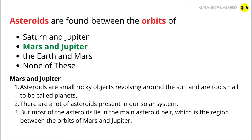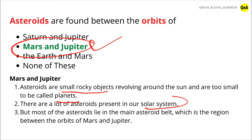Asteroids are found between the orbits of Mars and Jupiter. Asteroids are small rocky objects revolving around the sun and are too small to be called planets. There are a lot of asteroids present in our solar system, but most of the asteroids lie in the main asteroid belt, which is the region between the orbits of Mars and Jupiter. So, the answer is Mars and Jupiter.